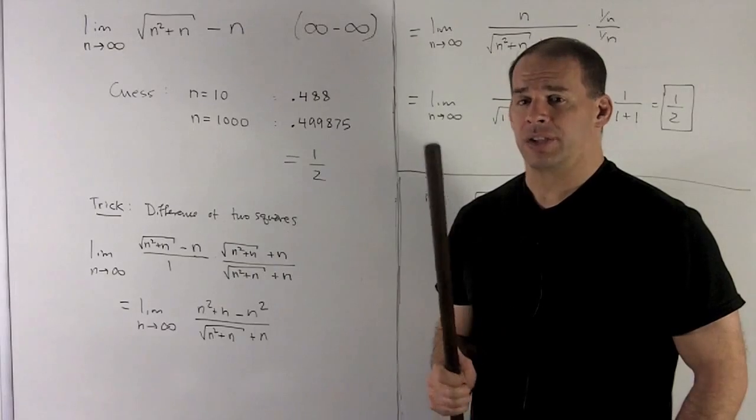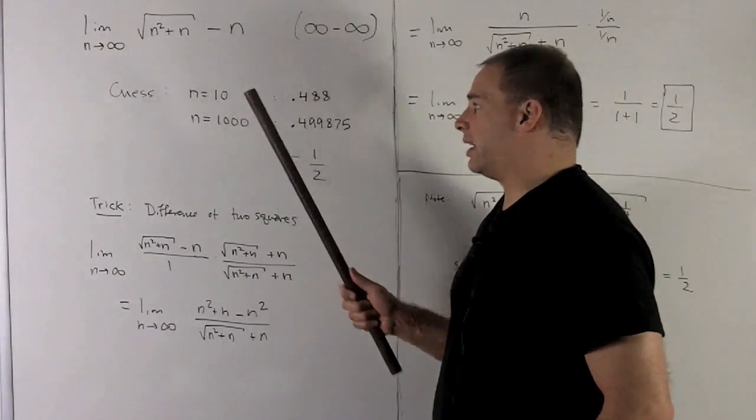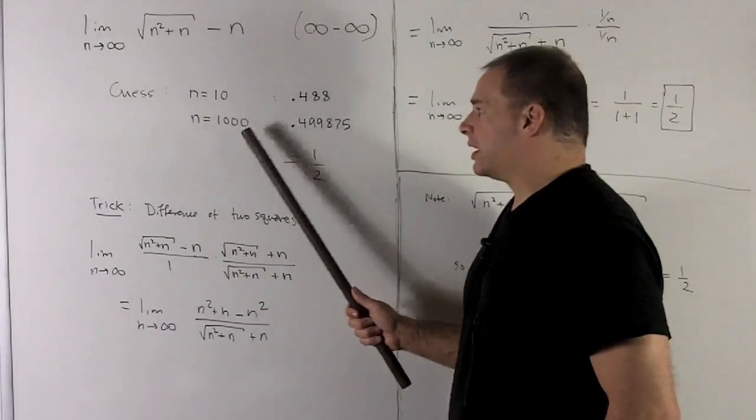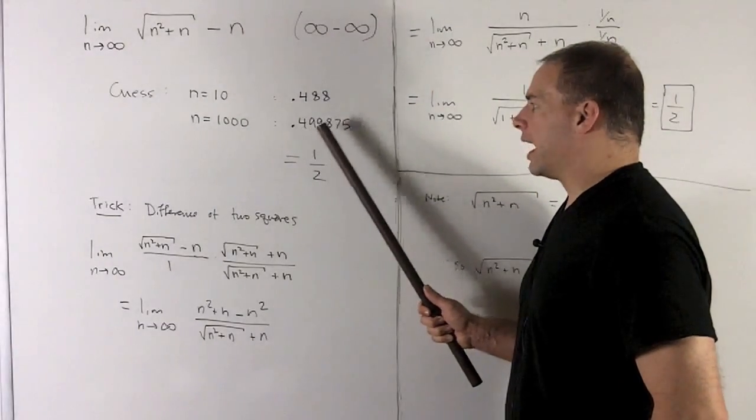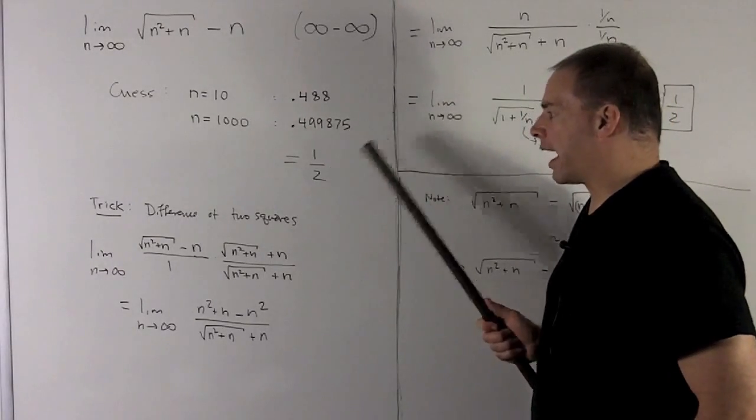Before we do more work, let's go to the calculator and stick in a few numbers. If I put a 10 in here, I'm going to get 0.488. If I put a thousand in here, I get 0.499875. And this thing is pretty much begging us to let it be one half.